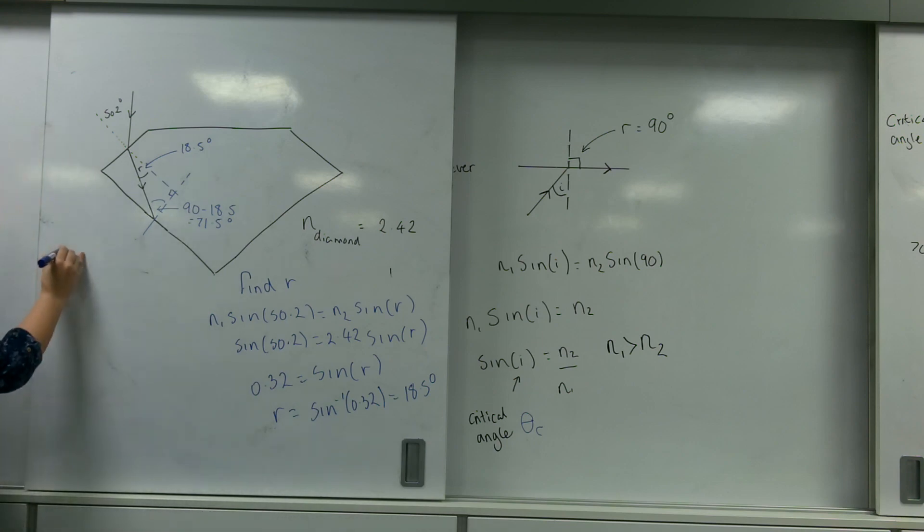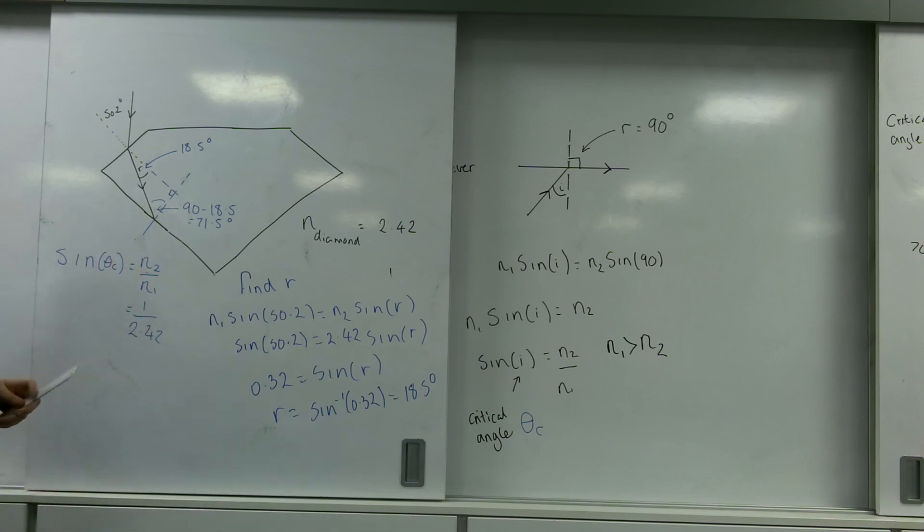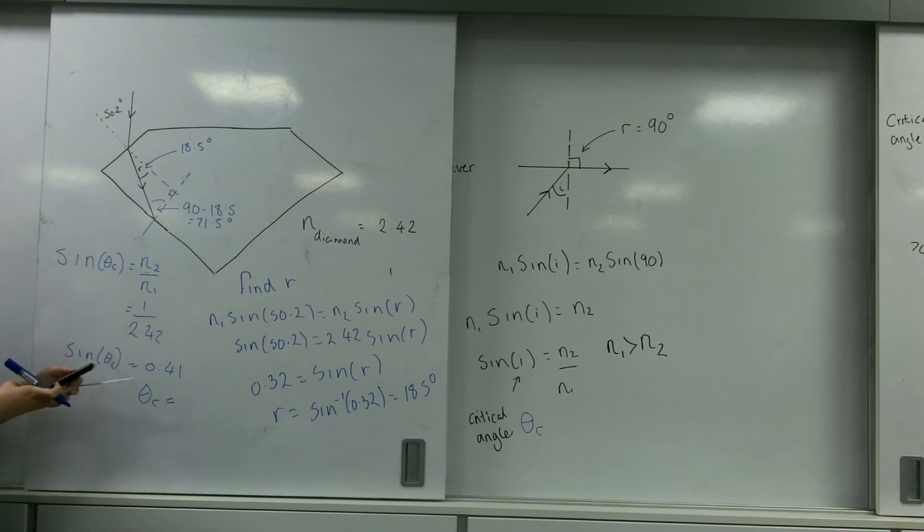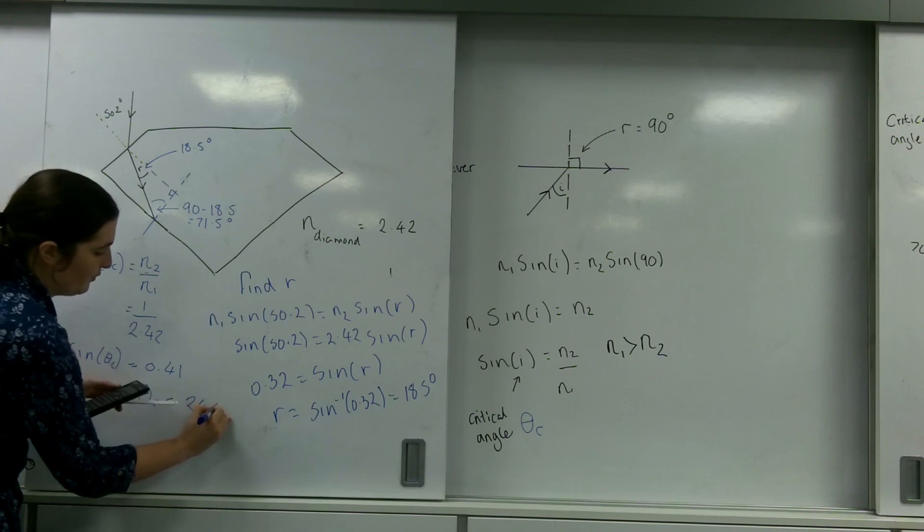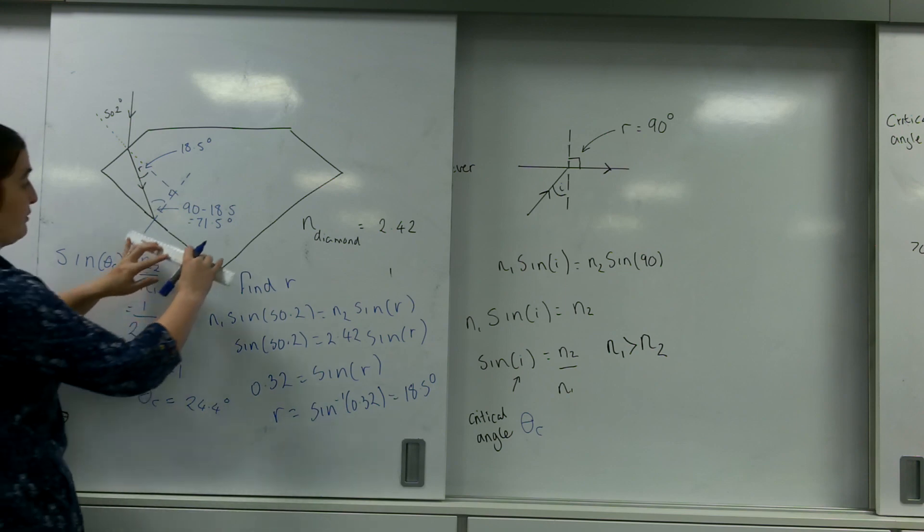So let's find out. Sine theta C is N2 over N1. So that is 1 divided by 2.42, because remember, we're going from diamond to air. So that's 1 divided by 2.42, which is 0.41. So theta C is 24.4 degrees. That angle of incidence, that angle here is much bigger than that, so we are going to be reflecting.